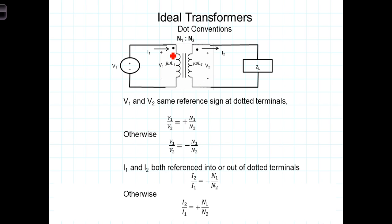If both V1 and V2 were referenced negative at the dot, they would still have the same sign reference at the dotted terminals, and V1 and V2 would have the same sign.